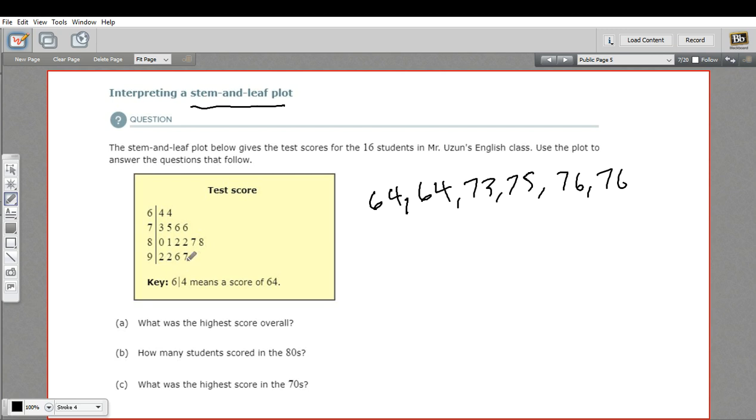We had quite a few in the 80s and the 90s. So we had four in the 90s, and six in the 80s. So 10 out of 16 got either 80 or 90 scores on there. So it looks like these students are scoring pretty well.